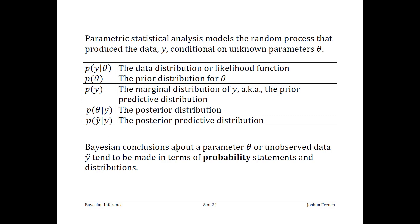Both the posterior distribution and the posterior predictive distribution are in fact distributions. In frequentist statistics we're usually after point estimates or point estimators and possibly the standard error associated with those things. The quantities of interest in frequentist statistics are not distributions, whereas in Bayesian statistics they are.